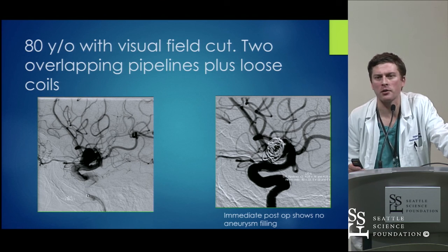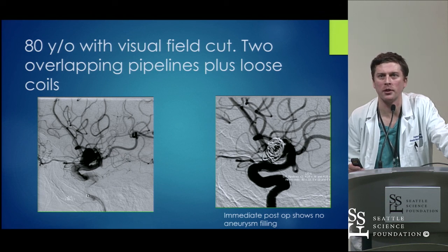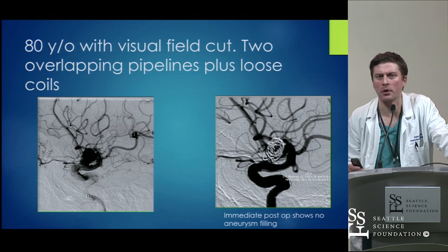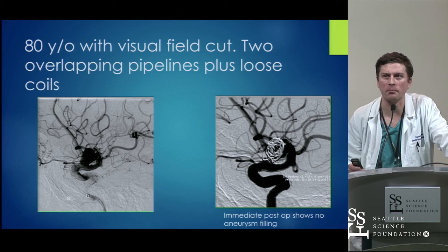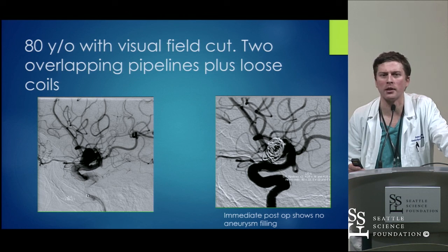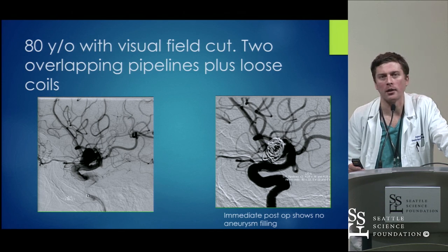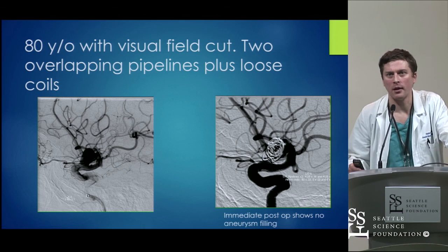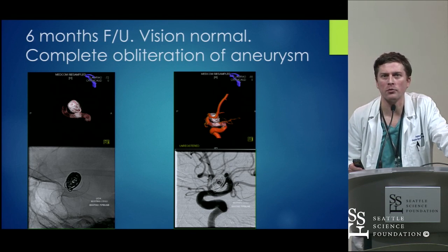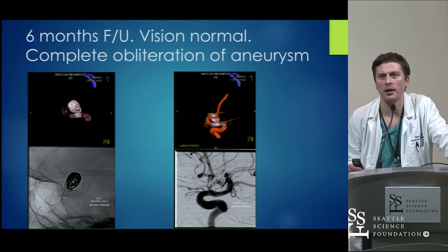This is an 80-year-old who came in with a visual field cut and a large aneurysm. Our practice for aneurysms greater than about a centimeter is to generally throw in a coil or two — it doesn't have to be packed as densely as with stent-assisted coiling. The flow-diverting effect of Pipeline is significant, but there's data suggesting that for larger aneurysms you can get a ball-valve effect where blood gets into the aneurysm and can't get out, and these larger aneurysms can pop. This was treated with two overlapping Pipelines with immediate contrast stasis, and at six months there was complete obliteration of the aneurysm with improvement in the visual field.